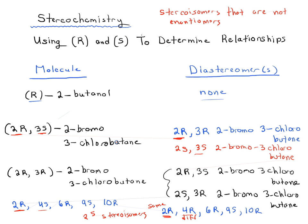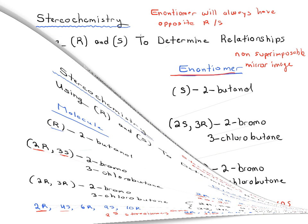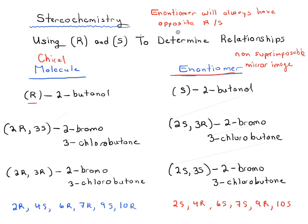Diastereomers really do outnumber enantiomers. To summarize: the enantiomer always has the opposite R/S designations. For diastereomers, at least one R/S designation is the same and at least one is different. Also, in order for a molecule to have an enantiomer, it must be chiral — it must not have a mirror plane.